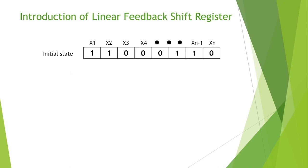Here we have an example running three times of shifting. The initial inner state of this example shift register is: 1, 1, 0, 0, 0, 1, 1, 0. We give it a rising clock, shifting to the right and outputting the last digit stored in the XN register. The output result is zero.